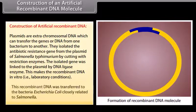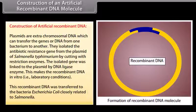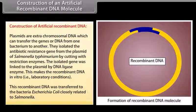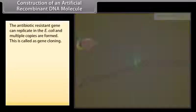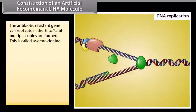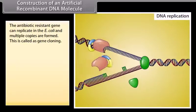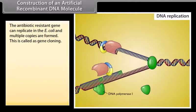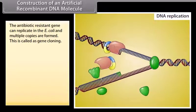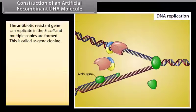This recombinant DNA was transferred to the bacteria Escherichia coli, closely related to Salmonella. The antibiotic resistance gene can replicate in E. coli and multiple copies are formed. This is called gene cloning.